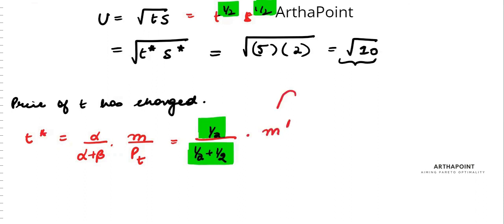So alpha is half and beta is also half, so alpha plus beta is half. M I don't know because this is what it is asking - what should be the new income? And the price of pt now that is $0.40. So it will be half into m dash into 10 by 4. So it will be 10 by 8 m dash. I will simply write this as 5 by 4 m dash.